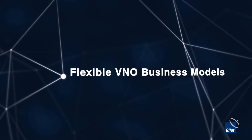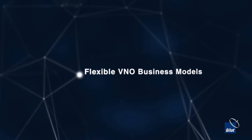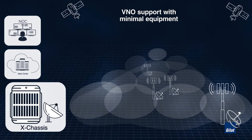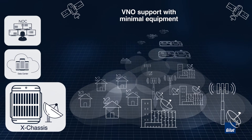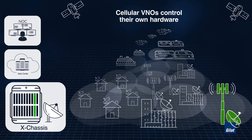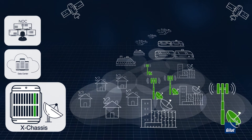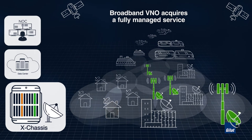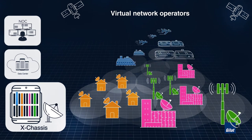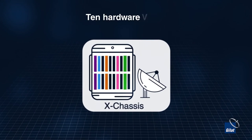You can also offer flexible business models for virtual network operators. Gilat's X-Architecture has been designed to support this with minimal equipment. For example, you can define cellular VNOs who control their own hardware, or add a broadband VNO who acquires a fully managed service from the hub operator. In fact, 10 hardware VNOs can be supported per hub, giving you the utmost flexibility.